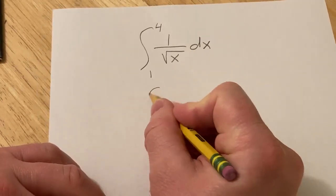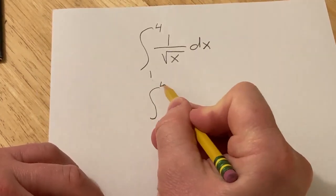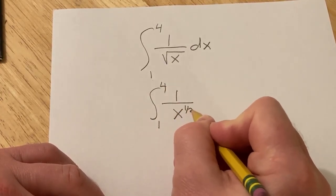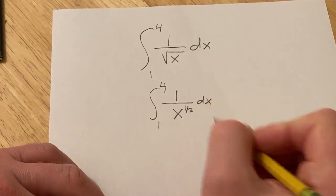So I'll do it in steps. The first step will be to rewrite the integral. So we're going from 1 to 4 and it's 1 over x to the 1 half, and then here we still have the dx.